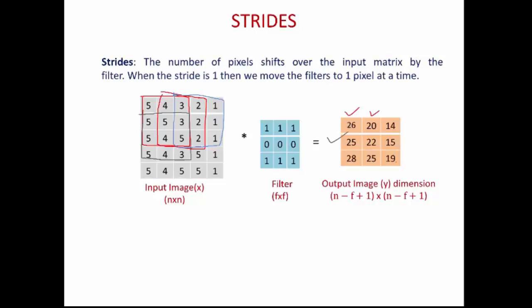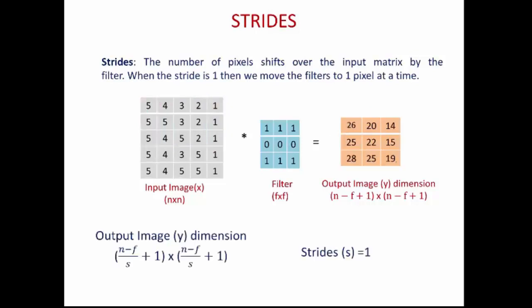However, the formula (n−f+1)×(n−f+1) is no longer valid if the stride value changes. The output dimension is normally calculated as ⌊(n−f)/s+1⌋ × ⌊(n−f)/s+1⌋. Since the stride is 1 in this case, these two equations are equal.